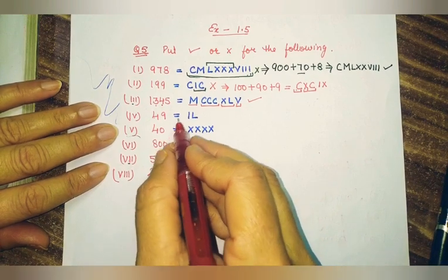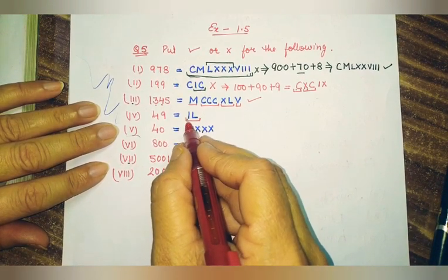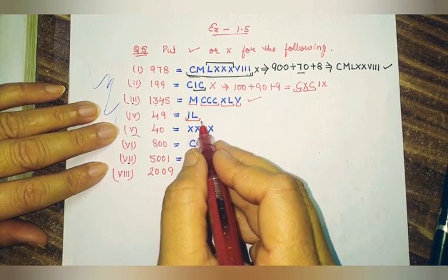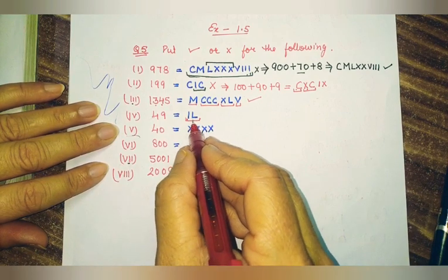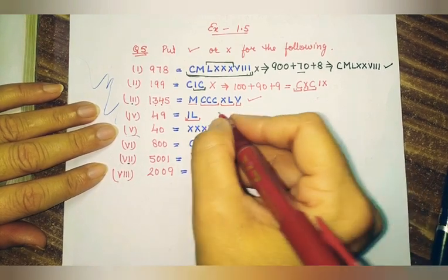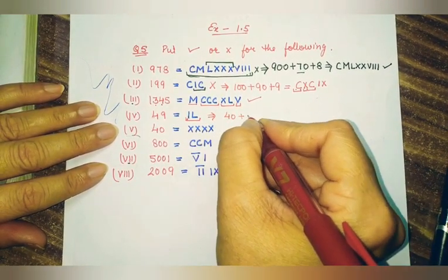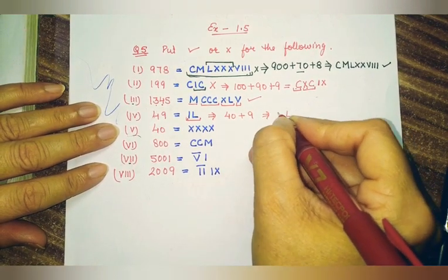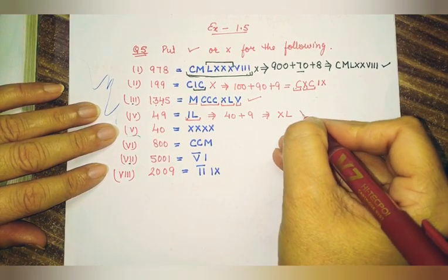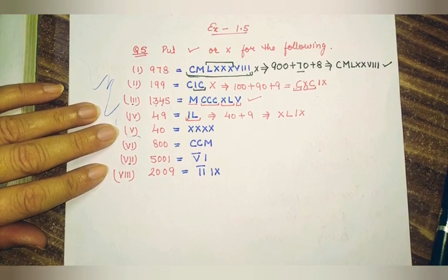Then they have given 49. By the same rule: I can be subtracted from only V and X — but here they have subtracted I from L, so that is wrong. The correct way to write 49 is 40 plus 9. Write 40 as 50 minus 10 (XL). Write 9 as 10 minus 1 (IX). So the correct Roman numeral for 49 is XLIX.